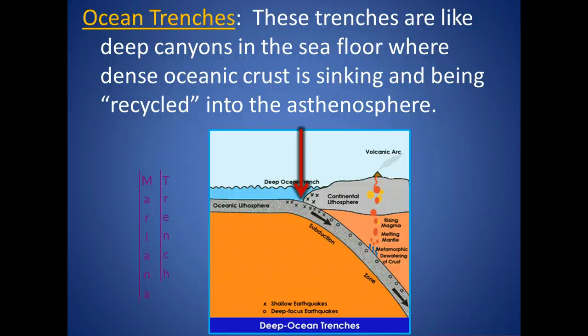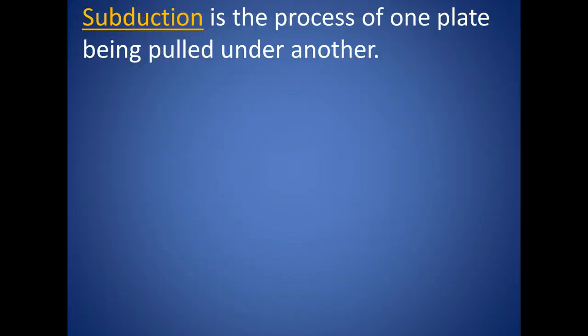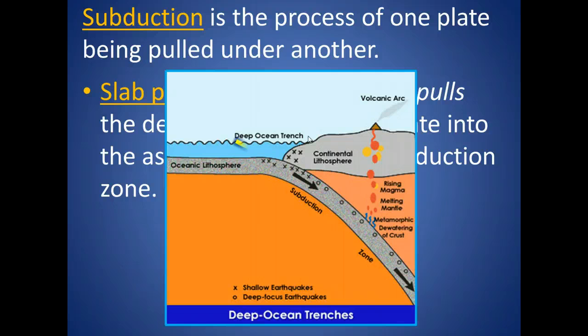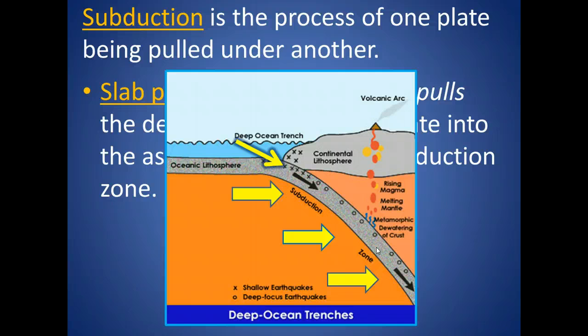That was a fun look at what the Mariana Trench looks like. What pulls the crust underneath the continental crust is called subduction — the process of one plate being pulled under another. Slab pull occurs when gravity pulls the denser, cooler oceanic plate into the asthenosphere at the subduction zone. Here we have the ocean trench, and as that is being pulled down, it's called subduction. This entire area is called the subduction zone, where the plate is being pulled down. When it gets further down towards the mantle, that's when it starts melting.